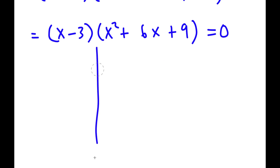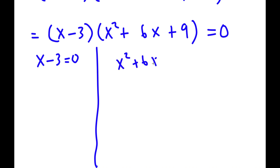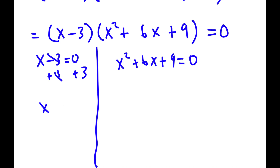This gives me two equations: x minus 3 is equal to 0, and x squared plus 6x plus 9 is equal to 0. For x minus 3 equals 0, all I have to do is add 3 on both sides, and I get x is equal to 3. So this is a simple equation.